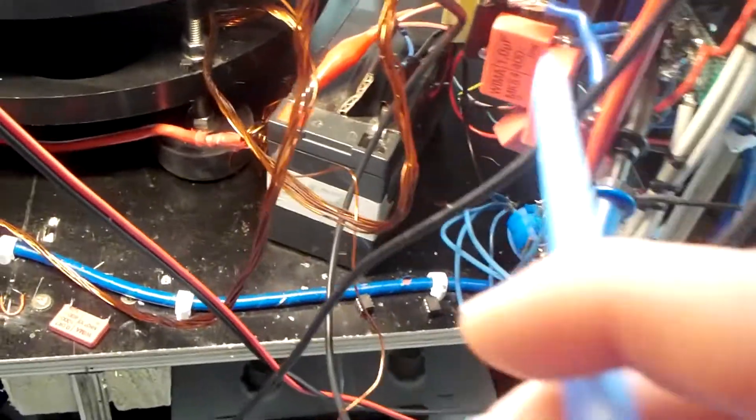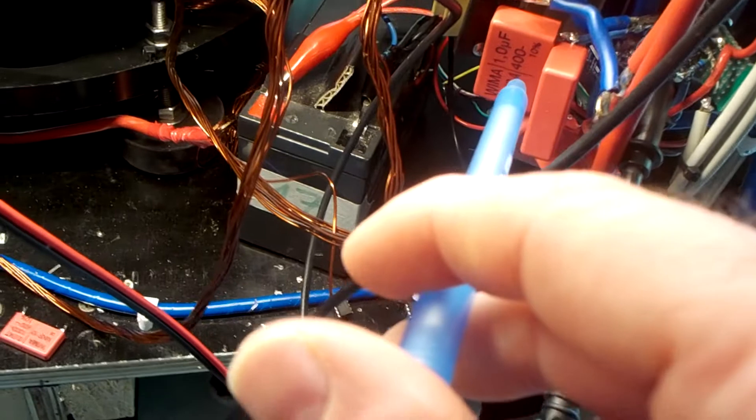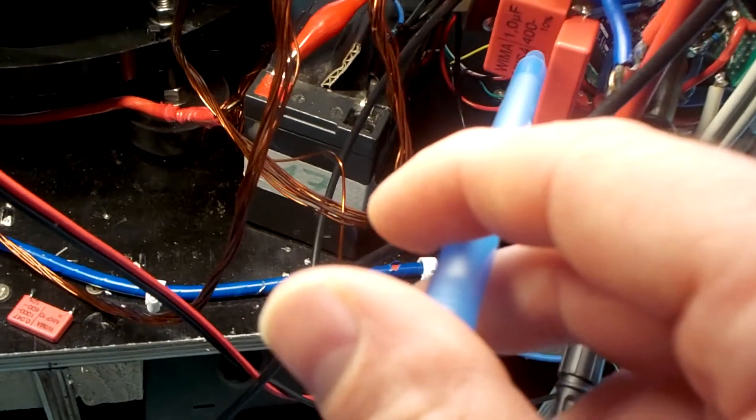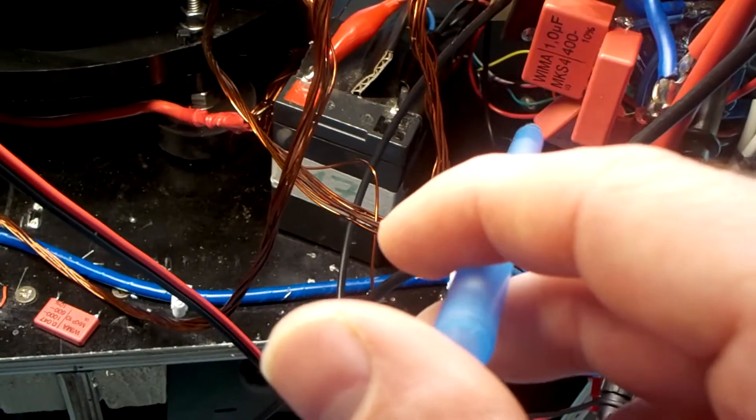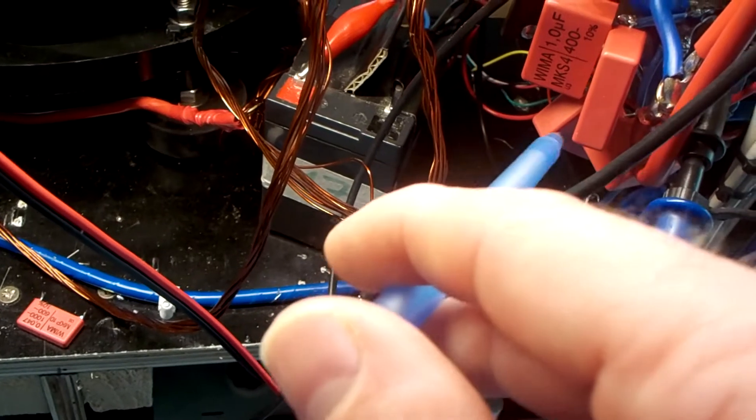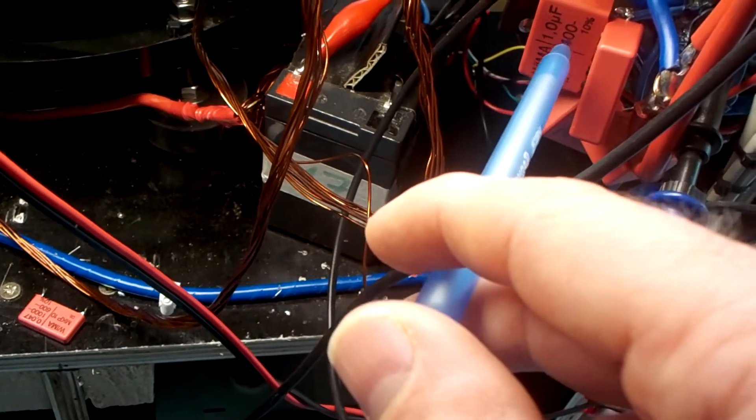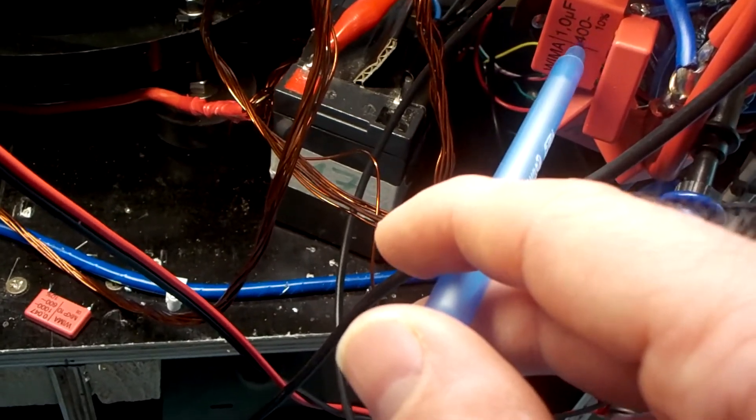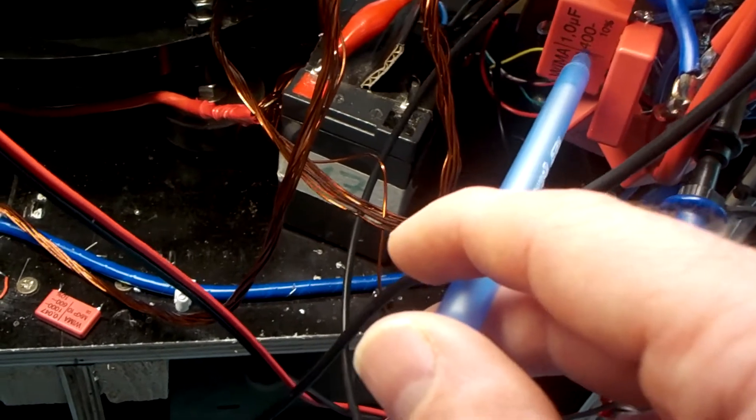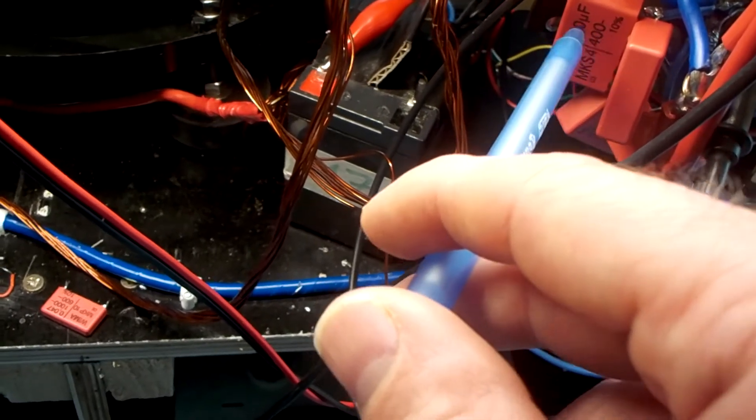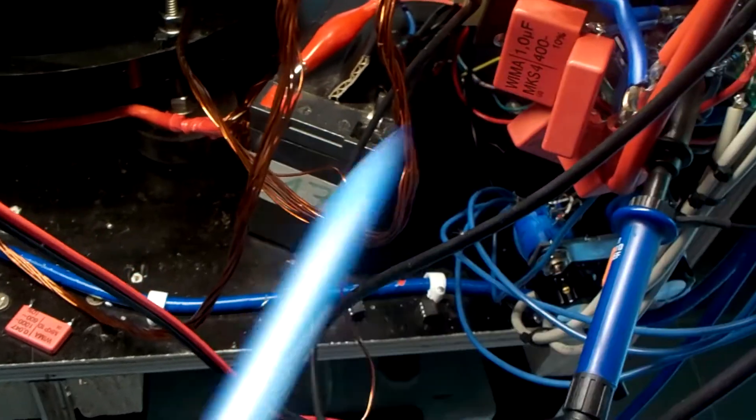As you can see I have put much more capacity over here. So I have now one microfarad 800 volts. You see four capacitors. They are each one microfarad and 400 volts. So they are two in series. So I have one half of a microfarad and then times two is one microfarad.